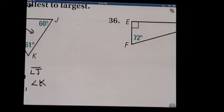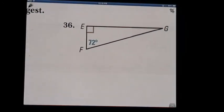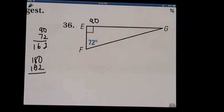Continuing on with number 36. Okay, recognizing that a right angle is 90 degrees. We have 90 plus 72 is 162. And then we're going to subtract 180 minus 162 is going to give us 18. So our last angle, which they graciously have not filled in, is 18 degrees.